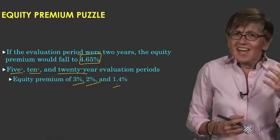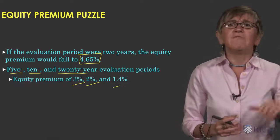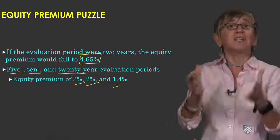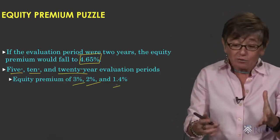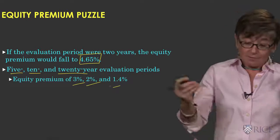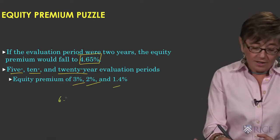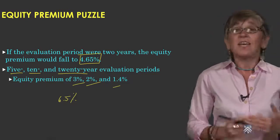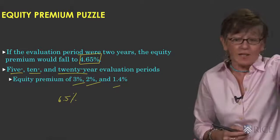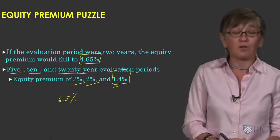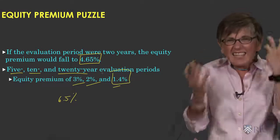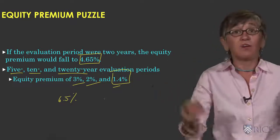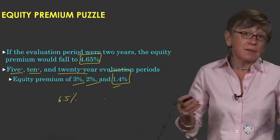So it's as if, for someone with a 20-year investment horizon, there is a psychic cost of evaluating the portfolio annually of about 5.1% per year. Where does that come from? If you're evaluating every year, the required premium is 6.5%. If we didn't evaluate at all, the required premium falls down to 1.4%. So it's like a psychic cost of not being able to look at the performance — about 5.1%. It's pretty amazing.